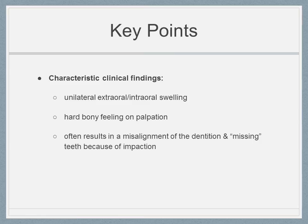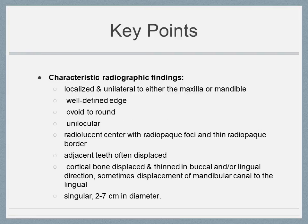Key points include characteristic clinical findings such as unilateral extraoral and intraoral swelling, a hard bony feeling upon palpation, and the lesion often results in a malaligned dentition and missing teeth because of impaction. Characteristic radiographic findings include localized and unilateral location in either the maxilla or mandible, well-defined edge, ovoid to round shape, unilocular with a radiolucent center with radiopaque foci and a thin radiopaque border.